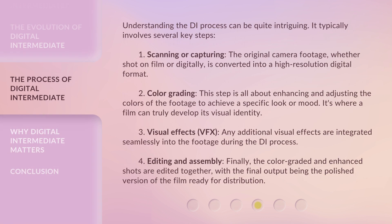Understanding the DI process can be quite intriguing. It typically involves several key steps. First, scanning or capturing: the original camera footage, whether shot on film or digitally, is converted into a high-resolution digital format. Second, color grading: this step is all about enhancing and adjusting the colors of the footage to achieve a specific look or mood — it's where a film can truly develop its visual identity. Third, visual effects (VFX): any additional visual effects are integrated seamlessly into the footage during the DI process. Fourth, editing and assembly: the color-graded and enhanced shots are edited together, with the final output being the polished version of the film ready for distribution.